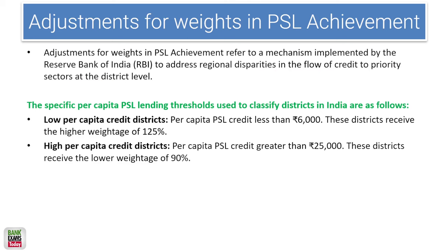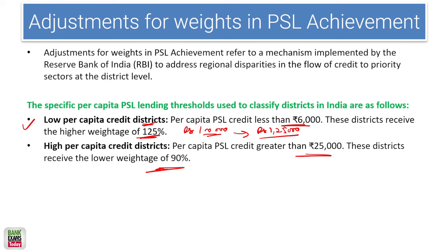Adjustment for weights in PSL achievement: in some districts, PSL loans were not being provided, so RBI categorized districts. Low per capita credit districts — where PSL credit was less than 6,000 rupees — receive a higher weightage of 125%. So if 1 lakh rupees of credit is provided in such a district, it counts as 1.25 lakh towards priority sector lending targets. High per capita credit districts, where PSL is greater than 25,000 per capita, carry a weightage of only 90%, encouraging more lending to underserved districts. This has been asked in previous papers.